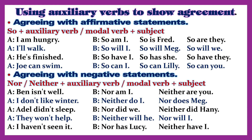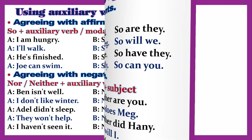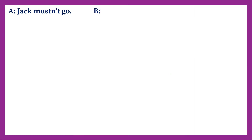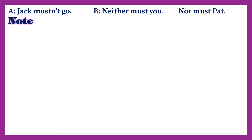More negative agreement examples. A: They won't help. B: Neither will he. Nor will I. A: I haven't seen it. B: Nor has Lucy. Neither have I. A: Jack mustn't go. B: Neither must you. Nor must Pat.